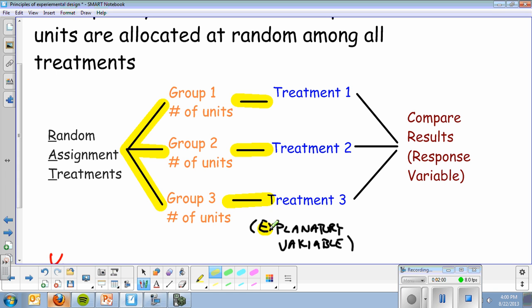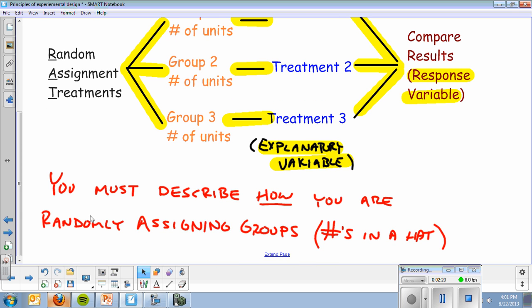The treatments are also known as the explanatory variables. They're going to explain changes in the response. At the very end, you bring everything back together, and you're going to measure the response variable and compare results. That's 50% of the problem right there. The only thing you'll need is you need to explain or describe how you are randomly assigning your groups, and that can be answered simply by the numbers in a hat.